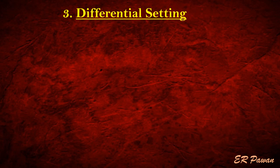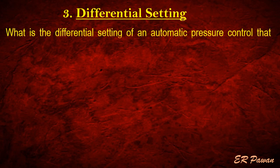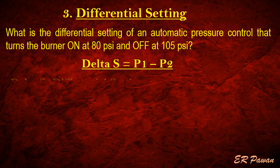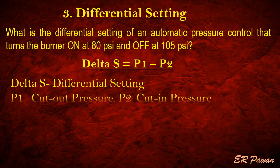Formula 3 — Differential Setting. What is the differential setting of an automatic pressure control that turns the burner on at 80 pounds per square inch and off at 105 pounds per square inch? Delta S equals P1 minus P2. Where Delta S = differential setting, P1 = cut-out pressure, P2 = cut-in pressure. Let's put the value in the formula.